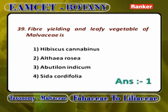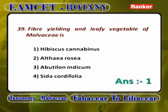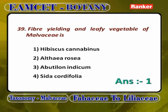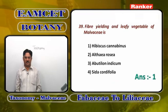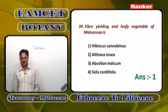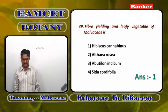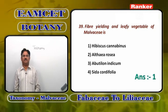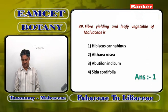Fiber-yielding and leafy vegetable of Malvaceae — Hibiscus cannabinus, Althaea rosea, Abutilon indicum, and Sida cordifolia are different types of plants which are not giving both fiber and leafy vegetables.